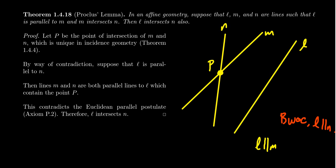Why is that a problem? Notice we have the line L, and we have the point P, which we know is not on L. How do we know that? P is on M and L and M are parallel, so P can't be on L. So we have a line and a point not on the line.